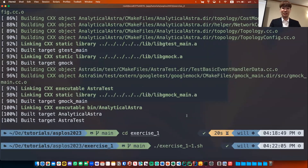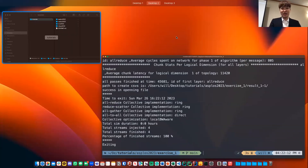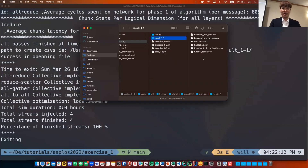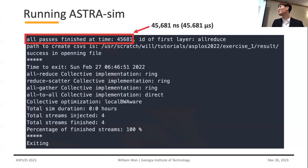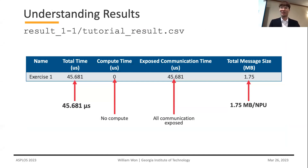The simulation finished running. These are the command line outputs, and the results are saved into the exercise one result folder with several CSVs. The key output line shows the all-pass finished at time 45,000 nanoseconds. In the CSV file, the total time is represented in microseconds — so running one megabyte of all-reduce collective on an eight-NPU ring took around 45–46 microseconds. There was no compute time since we had no compute, so all communications are exposed. The total message sent per each NPU was 1.75 megabytes.